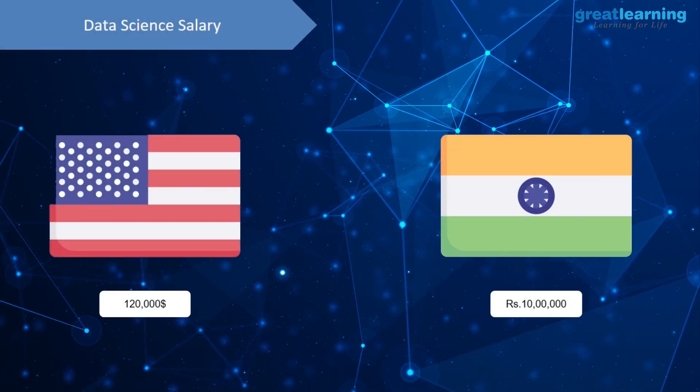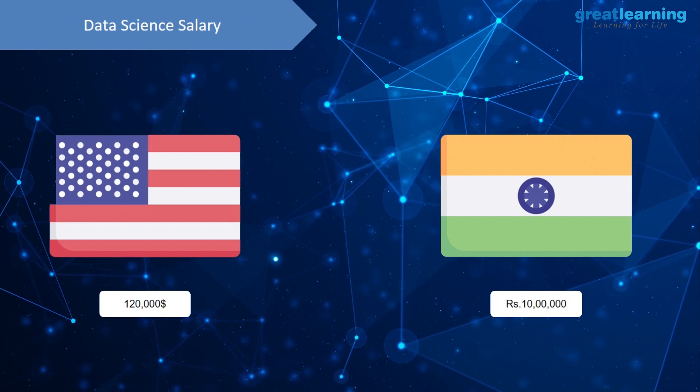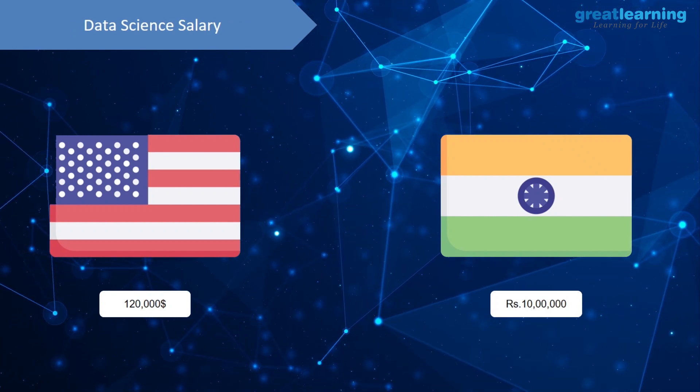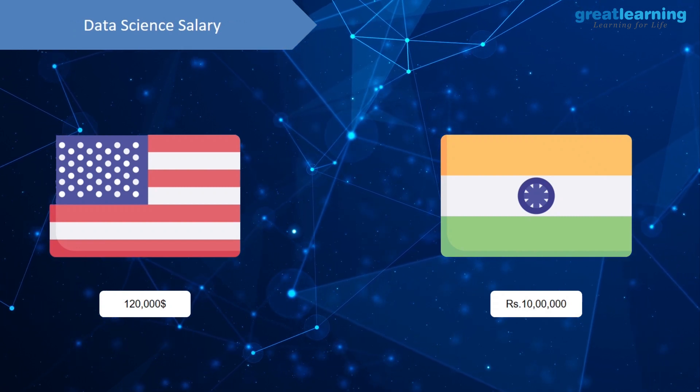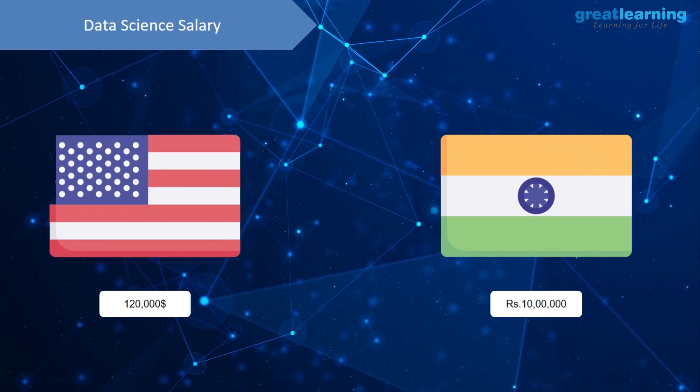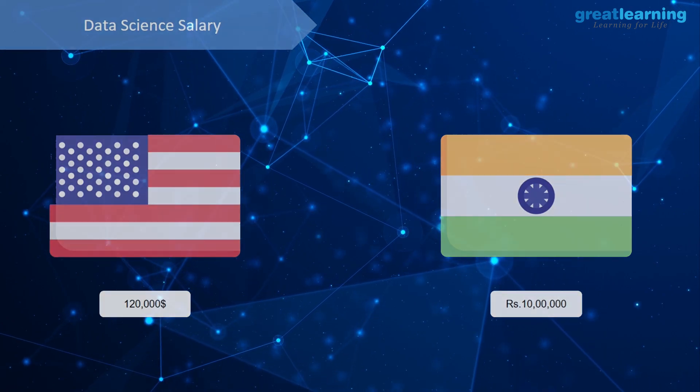Now that we understand the importance of data science, let's see how much does a data science role pay. According to McKinsey, the average salary of a data scientist in the United States is $120,000 per annum and rupees 10 lakh per annum in India.